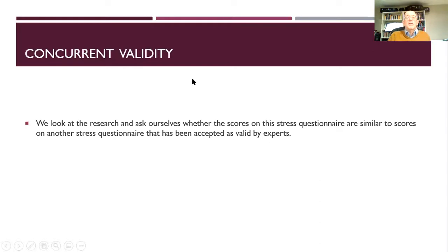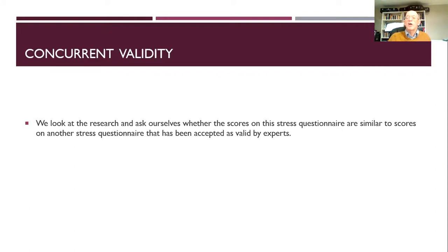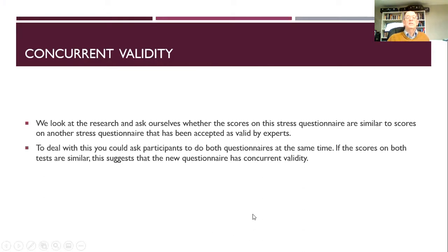Concurrent validity involves looking at whether scores on our stress questionnaire are similar to scores on another stress questionnaire that's been accepted as valid by experts. If we have one questionnaire we know works and is accurate, we'd expect the scores on a new questionnaire to be similar — that gives it concurrent validity. If someone scored as highly stressed on the established questionnaire, we'd expect them to score as highly stressed on ours too. The way to check this is to give participants both questionnaires and make that comparison.